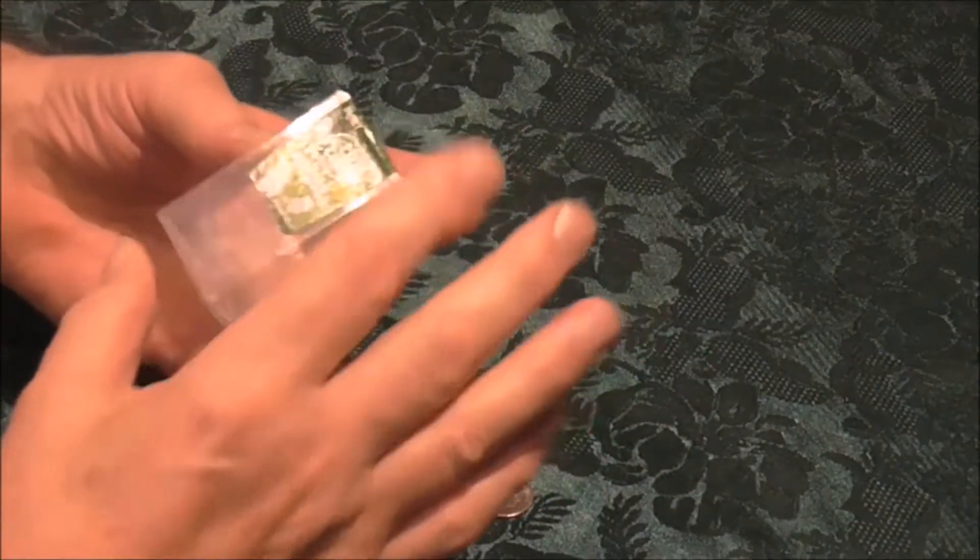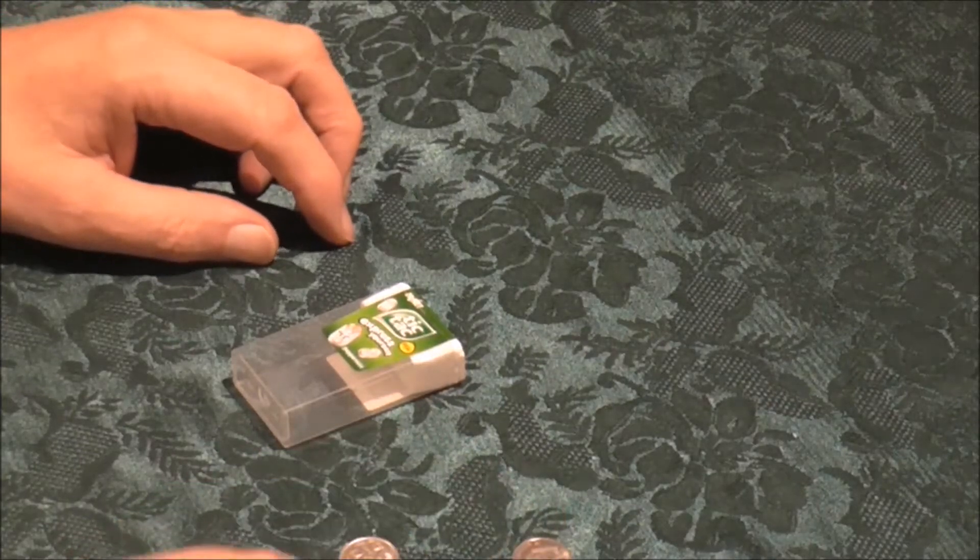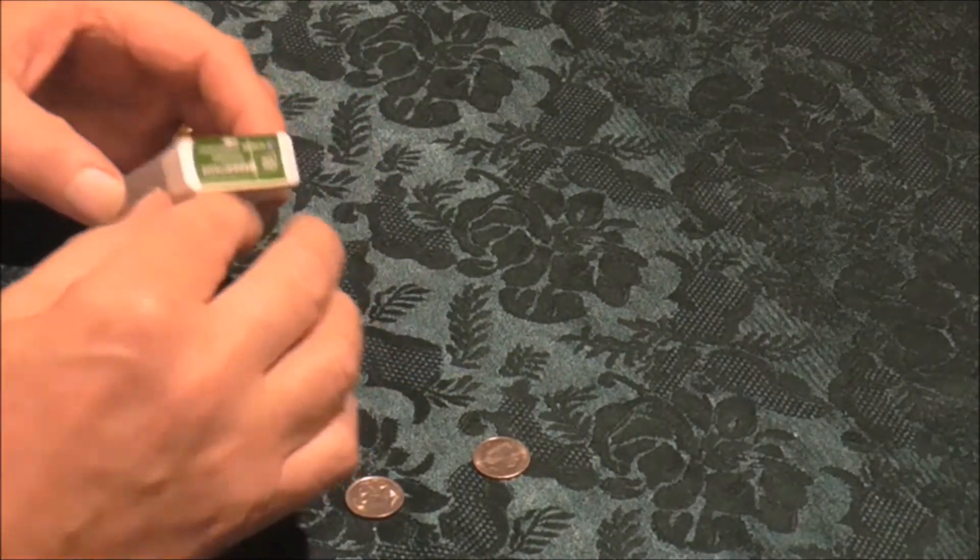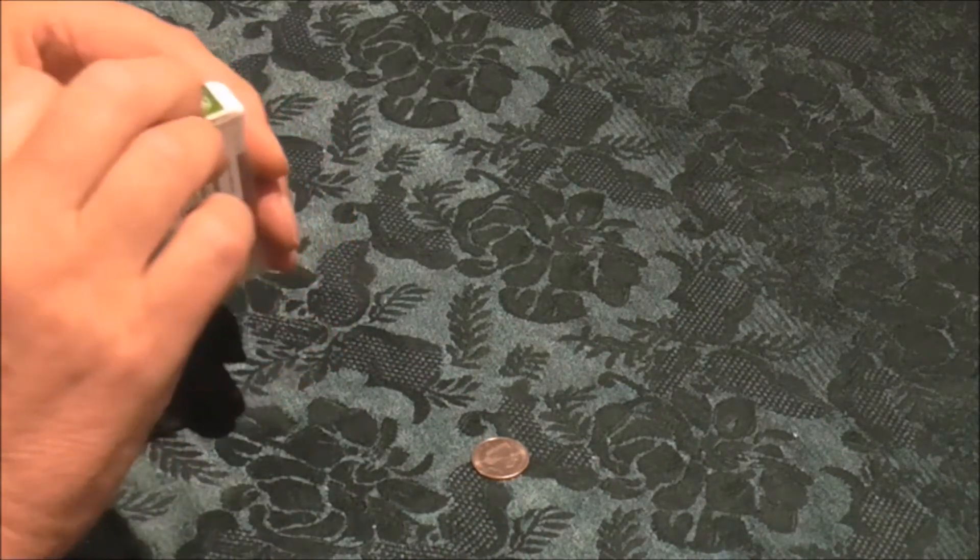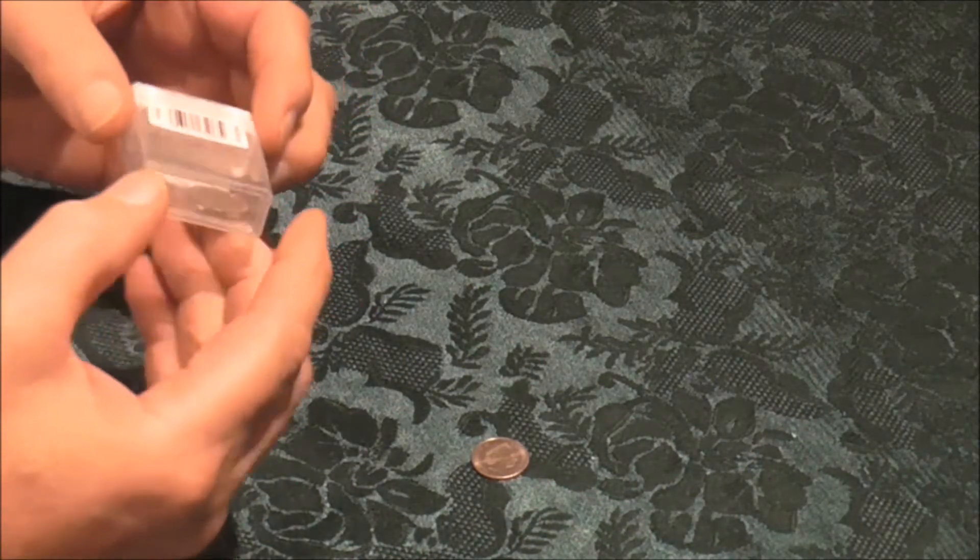Now here's the secret. It is just a normal Tic Tac box without any Tic Tacs at all, and you have two coins exactly the same, and make sure that the coins are as thin as you can possibly find. We don't want a thick coin for this because we're going to hide that coin underneath the front label.